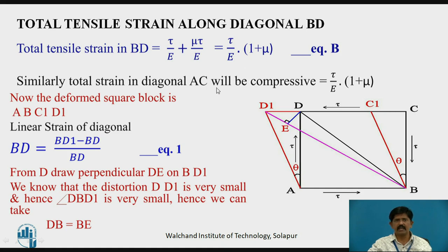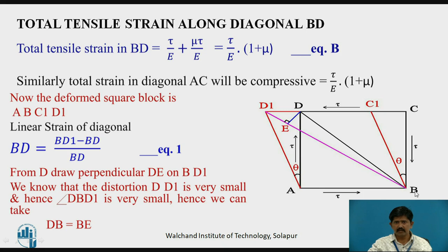Similarly, the strain in diagonal AC is of compressive nature with the same magnitude tau/E × (1 + mu). The linear strain of diagonal BD from equation 1 is the change in length upon original length, that is (BD1 − BD) / BD. We treat this as equation 1.